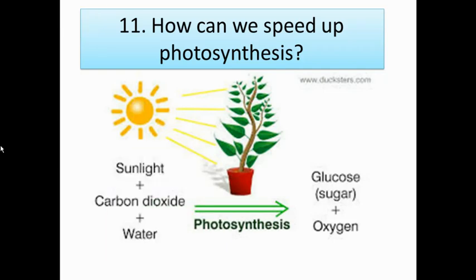The three things that plants need for photosynthesis are sunlight, carbon dioxide, and water. Really well done if you got those three things — they need sunlight, carbon dioxide, and water.